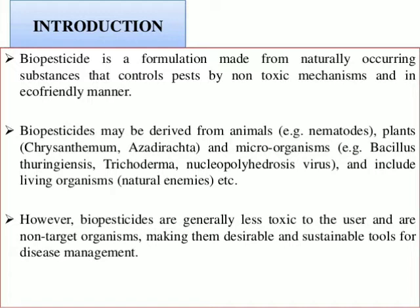For example, we can control mosquitoes by using insects like the dragonfly, which eats mosquitoes and helps in controlling them. There are also natural enemies of various pests that can be used to control those pests. This approach is called biological pest control.